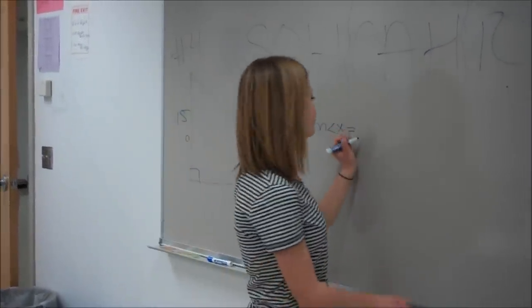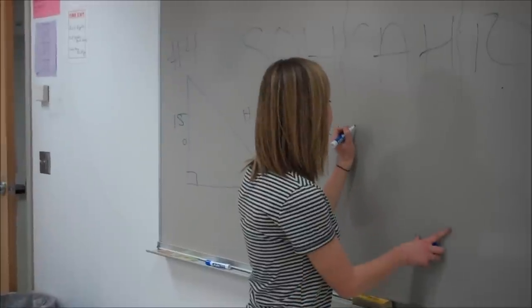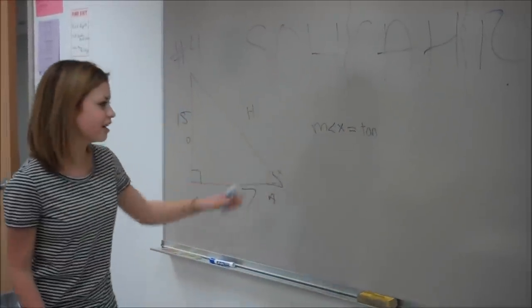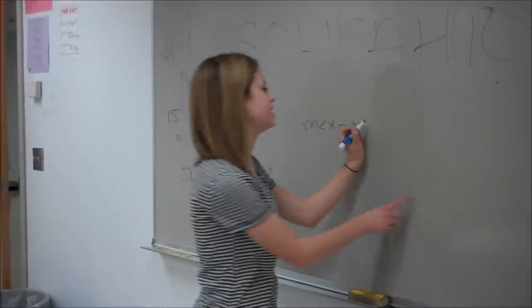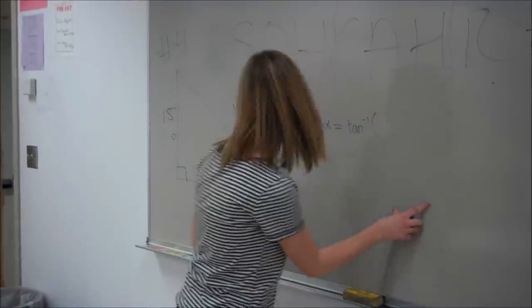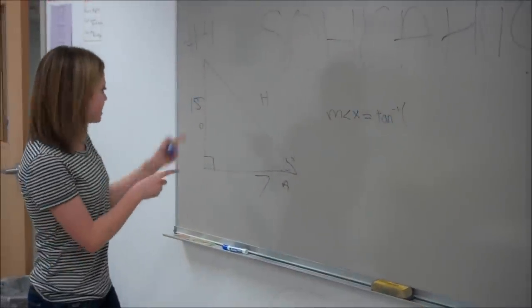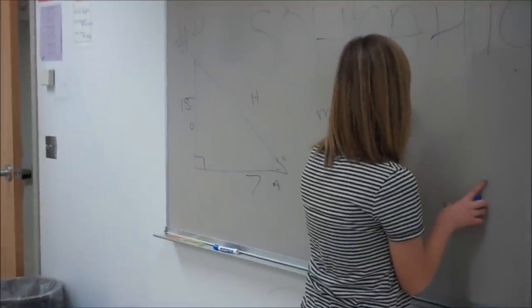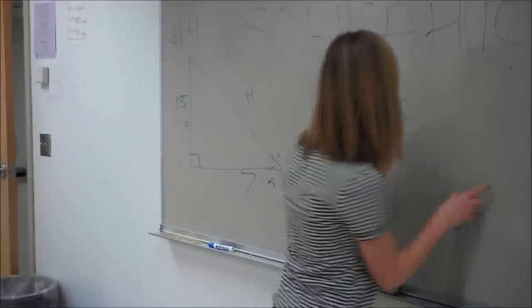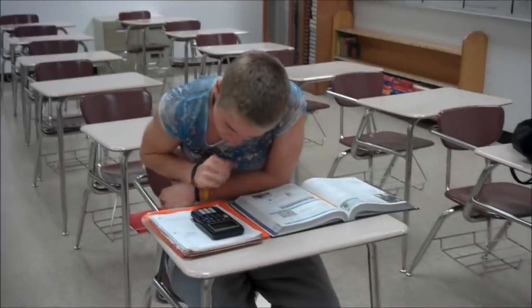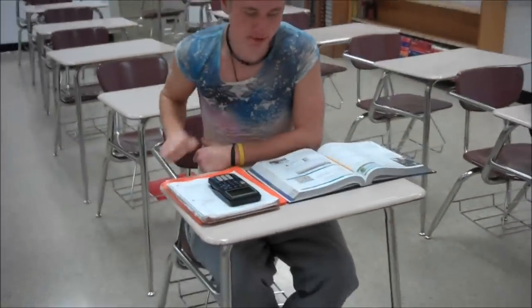Tangent. Yep. So then you write down tangent. And then this is the inverse, since we're solving for the angle. So you have to write down the inverse — opposite over adjacent: 15 over 7. And then you plug that into your calculator and find out what the answer is. Sixty-four point nine eight.